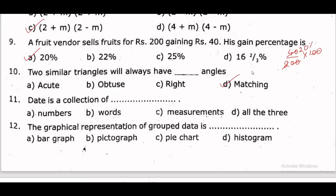Data is a collection of dash. Data is a collection of information. The information can be numbers, words, or measurements. All options are correct, so the answer is option D: all three.